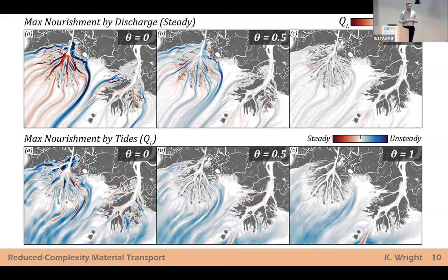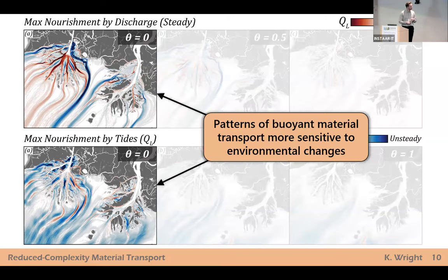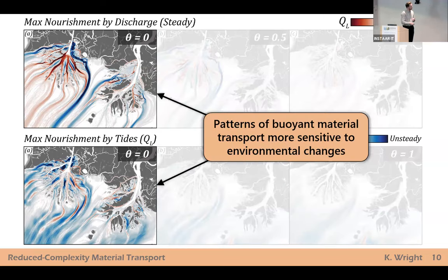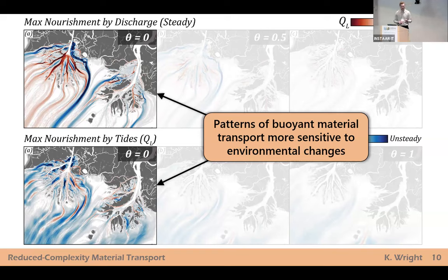There's a lot of interesting things to pull out of this picture. One specific finding worth pointing out is that as we move from left to right on this slide — increasing theta — we generally see less color difference. It appears that patterns of buoyant material transport are much more sensitive to environmental changes than at higher thetas. That's an interesting finding: maybe not super surprising, but it's very interesting to be able to quantify that.